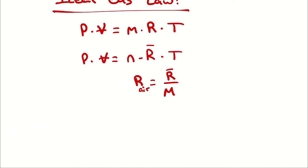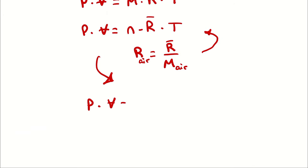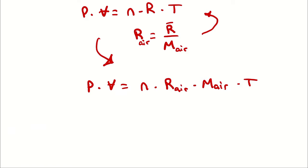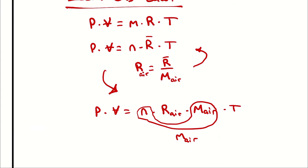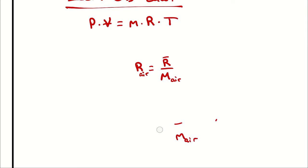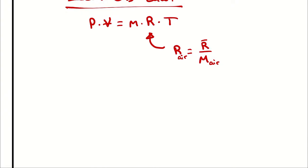For example, the specific gas constant for air would be the universal gas constant divided by the molar mass of air. So substituting, pressure times volume equals number of moles times specific gas constant for air times molar mass of air times temperature. The number of moles times the molar mass can be rewritten as the mass of air. So PV = mRT is not any different equation than the ideal gas law you may know and love — we just use mass instead of moles and calculate our specific gas constant for the substance at hand.